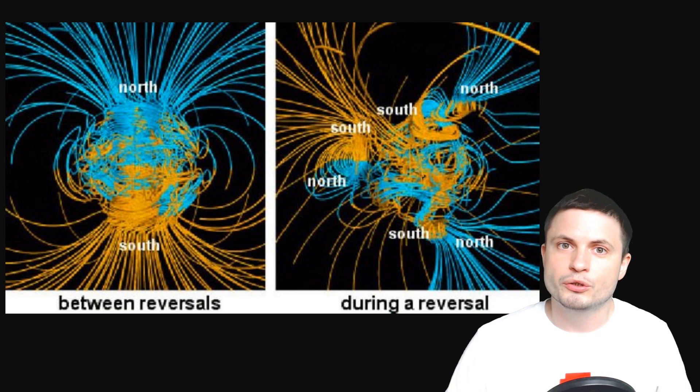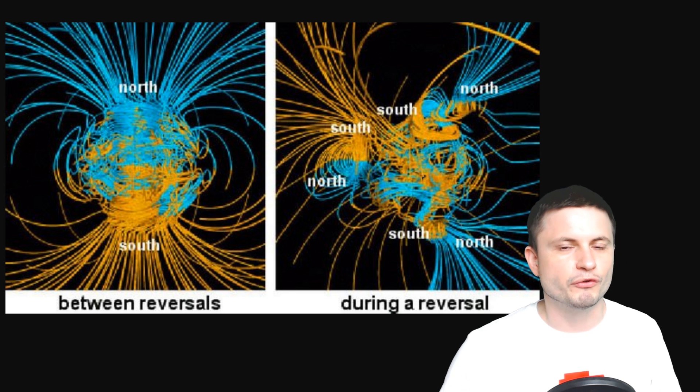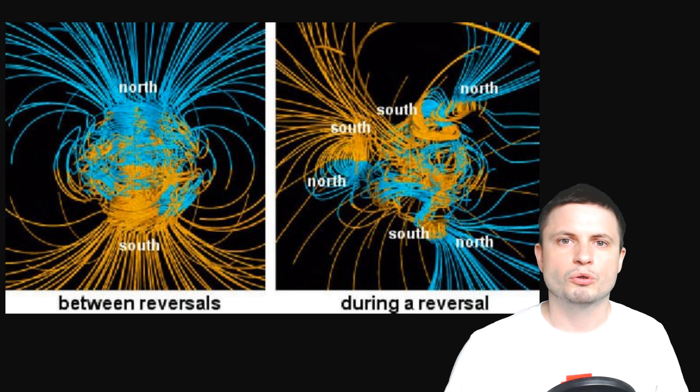Before I continue, I have to mention that we don't really understand either reversals or excursions very well yet. We don't really understand the mechanisms behind them. We don't really know what exactly causes them, neither do we understand well the patterns behind them or what could be occurring before or after such reversals. One thing we do know, though, is that they have happened previously, and we know exactly how the magnetic field of our planet has changed, where it was pointing, and how much radiation our planet was receiving.